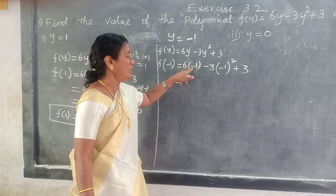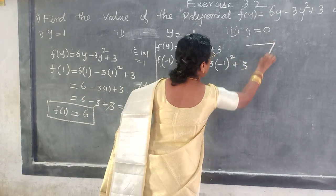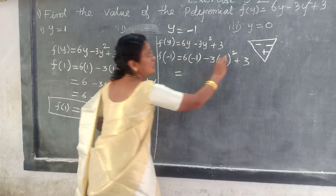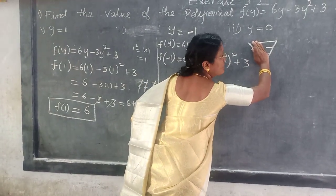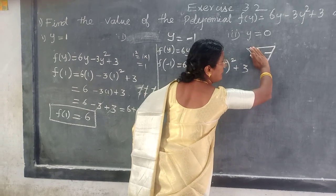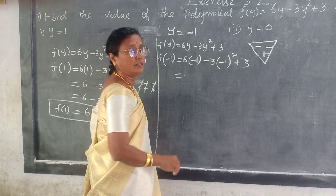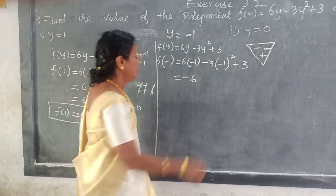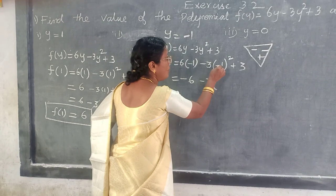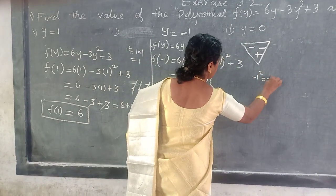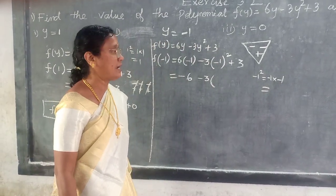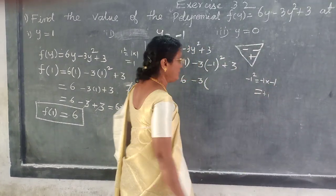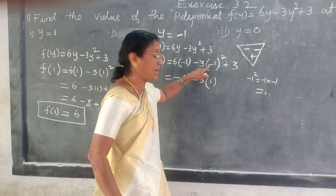Here this is plus 6. Here minus. So plus into minus is minus. Very good. Now, minus 1 squared means what? Minus 1 into minus 1. Plus 1. Very good. Minus 1 into minus 1: minus into minus is plus. 1 into 1 is 1.